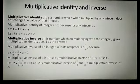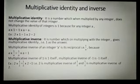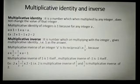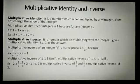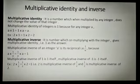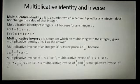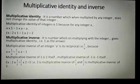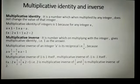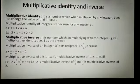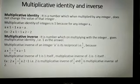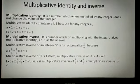Multiplicative inverse of 1 is 1 itself, because 1 multiplied by 1 gives 1. And multiplicative inverse of minus 1 is minus 1 itself, because minus 1 multiplied by minus 1 gives 1. For example, 2 multiplied by 1/2 is the same as 1/2 multiplied by 2 — the 2s get cancelled and you get the answer 1. So 2 is the multiplicative inverse of 1/2, and 1/2 is the multiplicative inverse of 2.